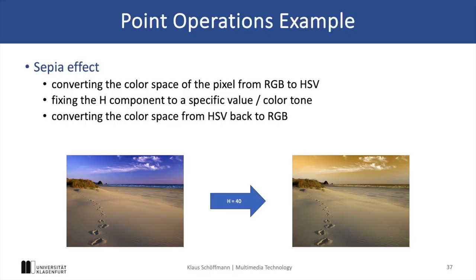The CPI effect, which you can see on this slide, can be achieved by converting from RGB to HSV and then fixing the hue value for every pixel — in this example it would be 40 — and then converting back to RGB. This results in a nice vintage tone, as you can see here on the slide.